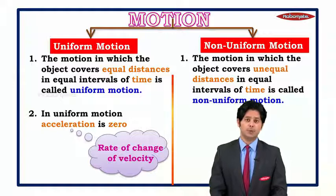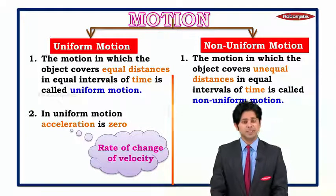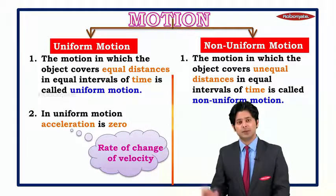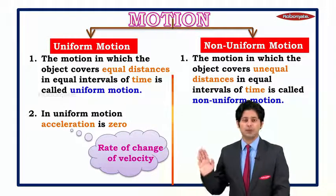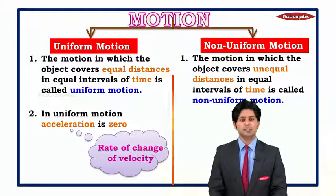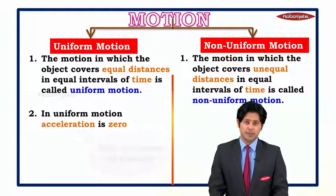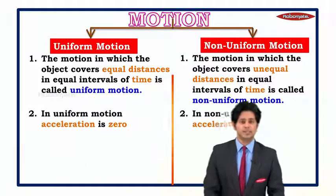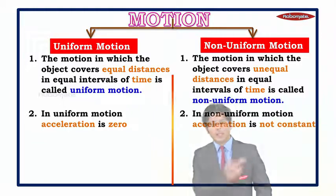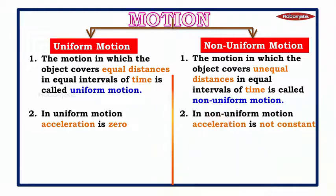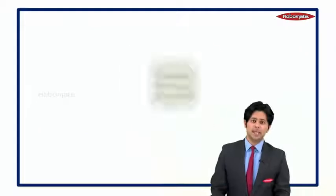In uniform motion, acceleration is zero. Acceleration is basically the rate of change of velocity, which we will study in detail in a later segment of the chapter. In non-uniform motion, acceleration is not constant.